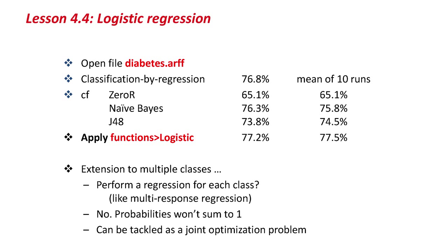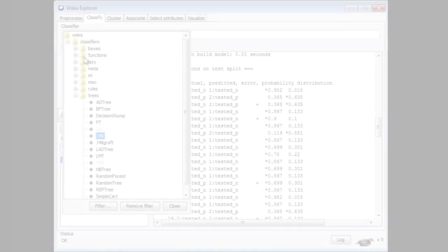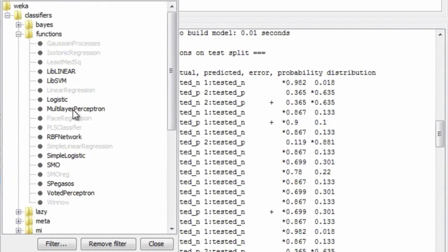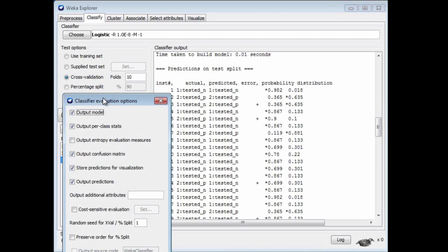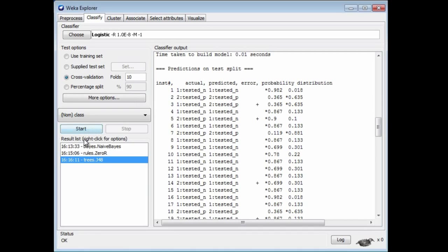We're going to use the Diabetes dataset. In the last lesson, we got 76.8% with classification by regression. Let me tell you, if you do ZeroR, Naive Bayes, and J48, you get these numbers here. I'm going to find the logistic regression. Its function is called Logistic. I'm going to use 10-fold cross-validation. I'm not going to output the predictions.